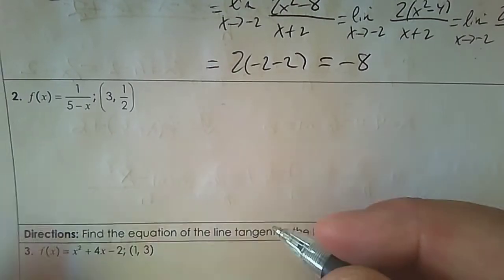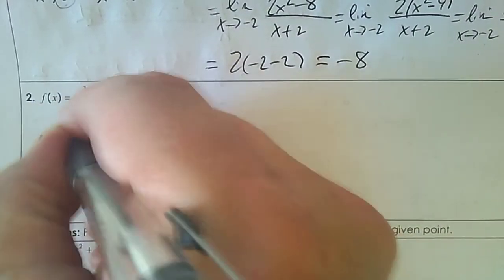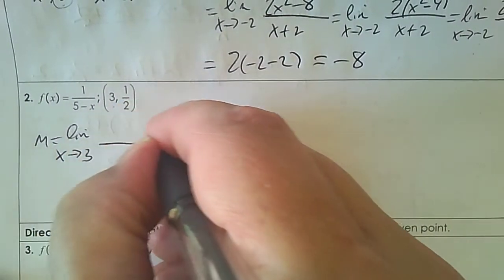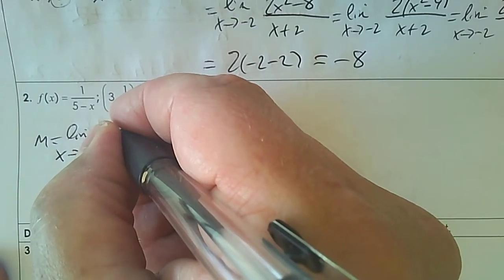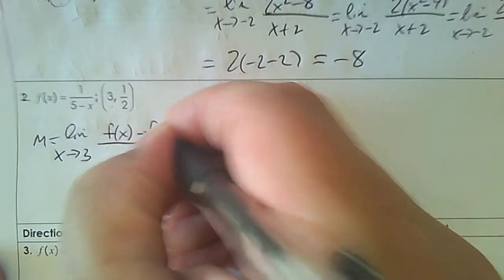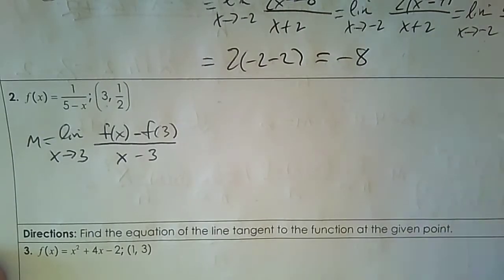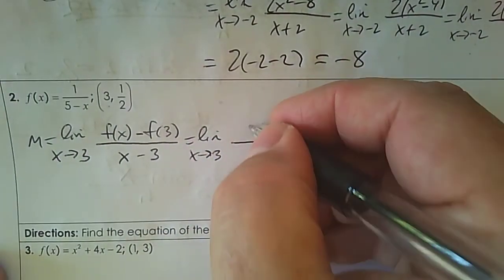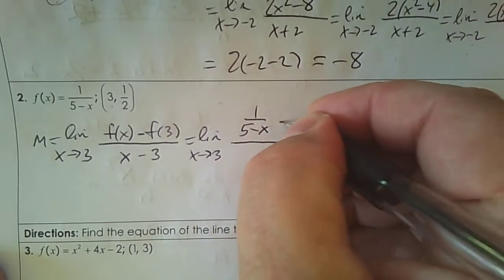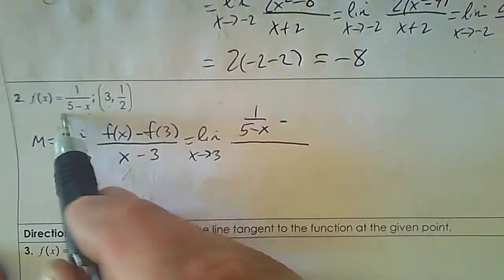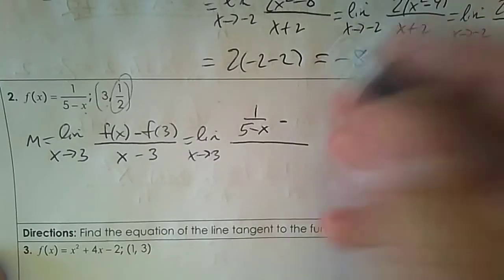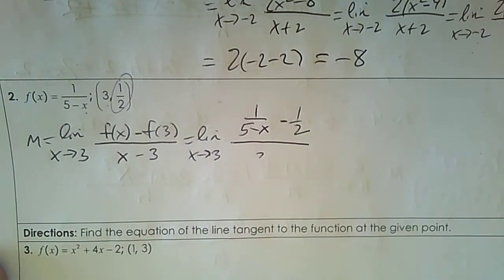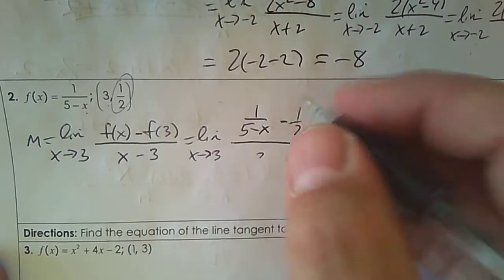Number 2. Let's use that same formula because we know the x value. The slope is the limit as x approaches 3. The formula is f(x) subtract f(3) over x subtract 3. So f(x) is 1 over (5 minus x), and f(3): 5 take away 3 is 2, so f(3) = 1/2. The denominator would be x take away 3.